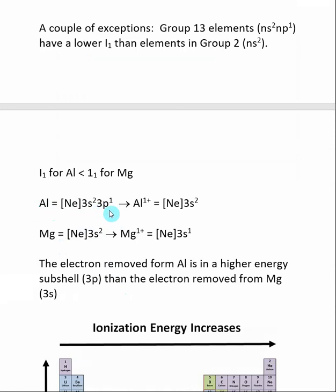Between these two, the 3P subshell is actually higher in energy, which makes it easier to remove. So we can say that the ionization energy for aluminum is lower than the ionization energy for magnesium.